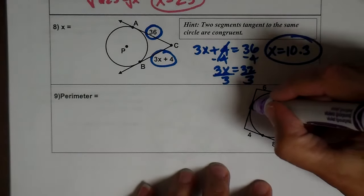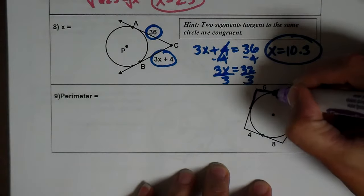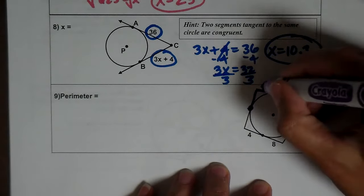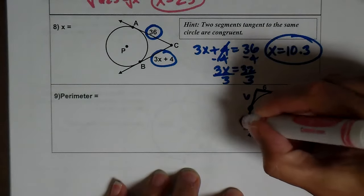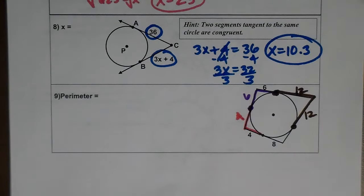Now I've got another pair of tangents. I have this tangent and this tangent here, so if that's 6, that's 6. I've got another pair of tangents that are tangent to the same circle. If that's 4, that's 4.